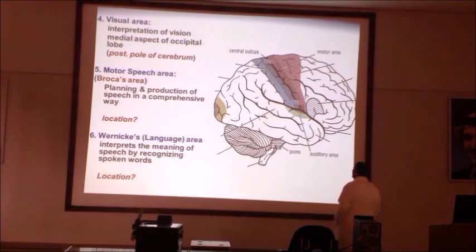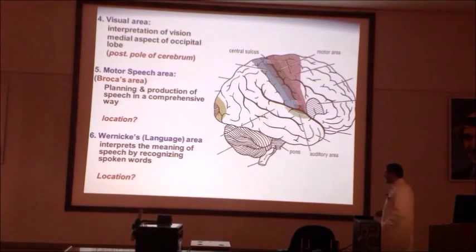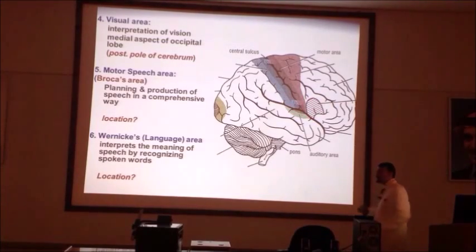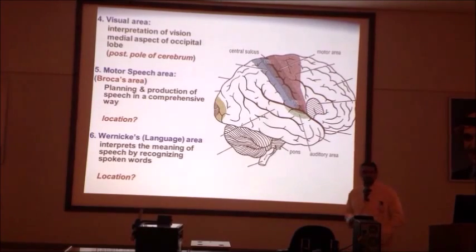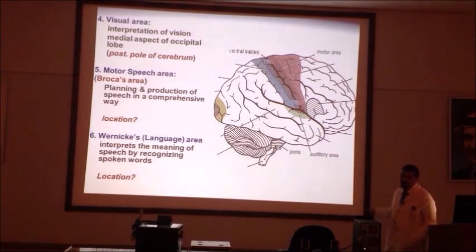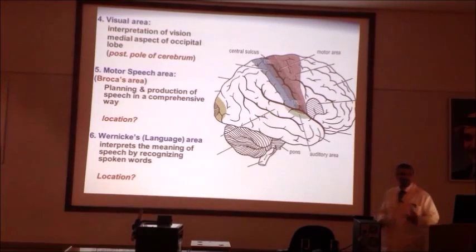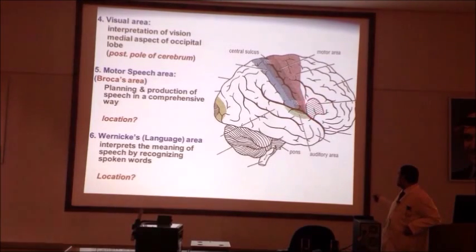The third area related to speech and language is Broca's area, named after French surgeon Paul Broca — also called the motor speech area. Broca's area is located in the inferior frontal gyrus. Neurons here are related to the planning and production of speech in a comprehensive, proper manner — building sentences correctly.